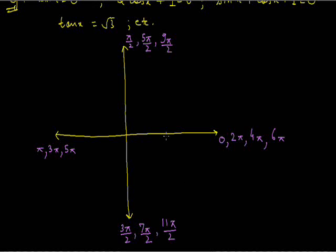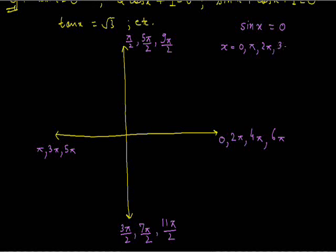Now what we need to observe is: suppose we have the trigonometric equation sin x equals to 0. We know that sin x equals 0 when x equals 0, or pi, or 2 pi, or 3 pi, or 4 pi, and so on. From this diagram, you can see that all these values appear on the horizontal line: 0, pi, 2 pi, 3 pi, 4 pi, 5 pi, 6 pi, and so on.